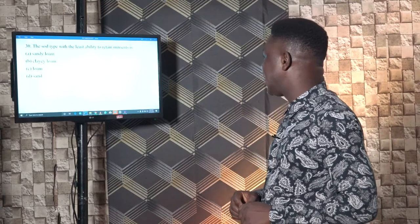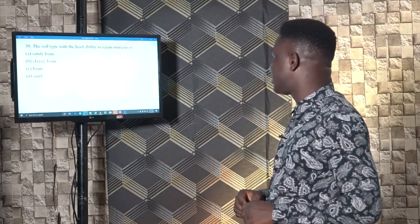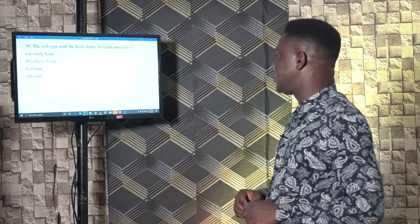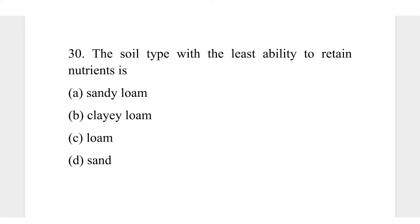Question 30. The soil type with the least ability to retain nutrients is: A, sandy loam; B, clay loam; C, loam; D, sand. The soil with the least ability to retain nutrients is sandy soil. So the correct answer is D. Sandy soil has the least ability to retain nutrients and is therefore the least fertile soil.